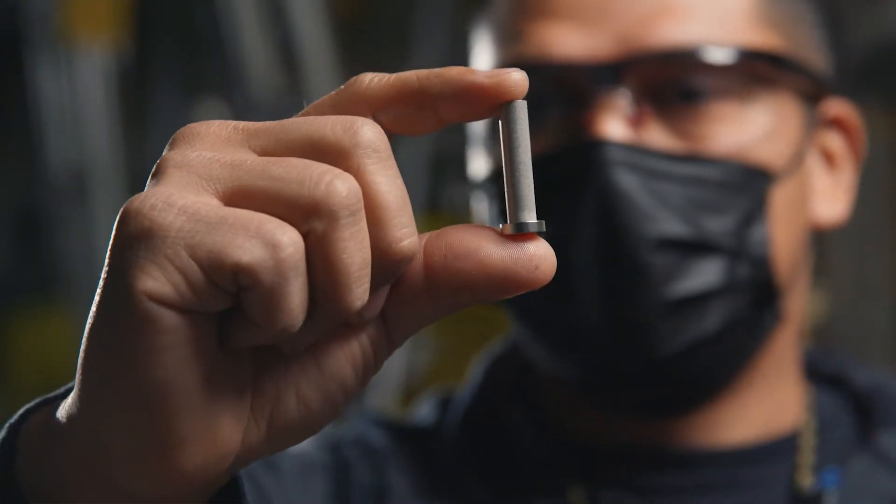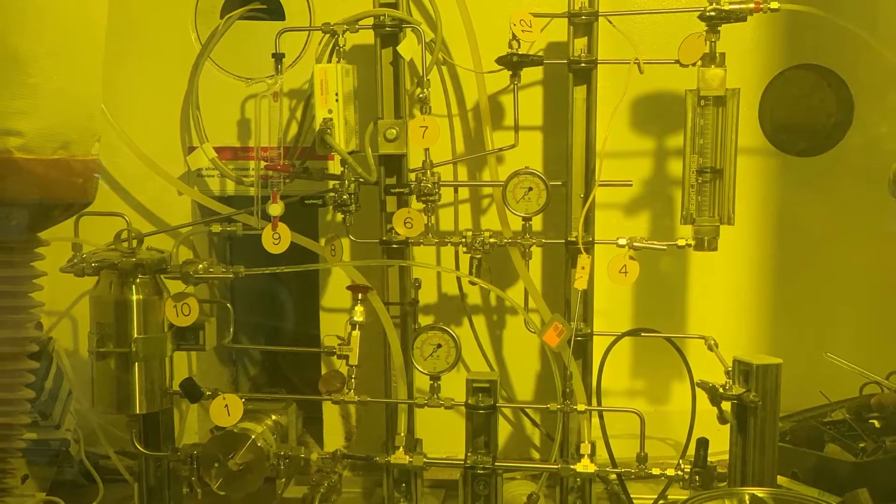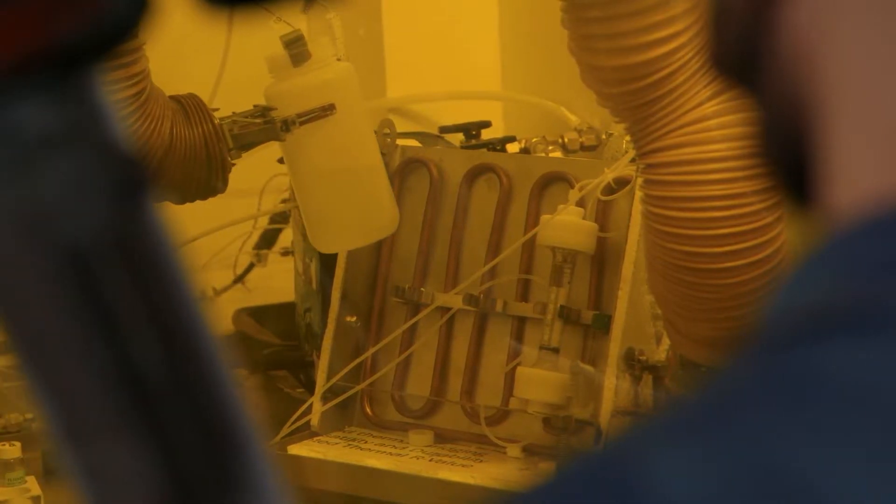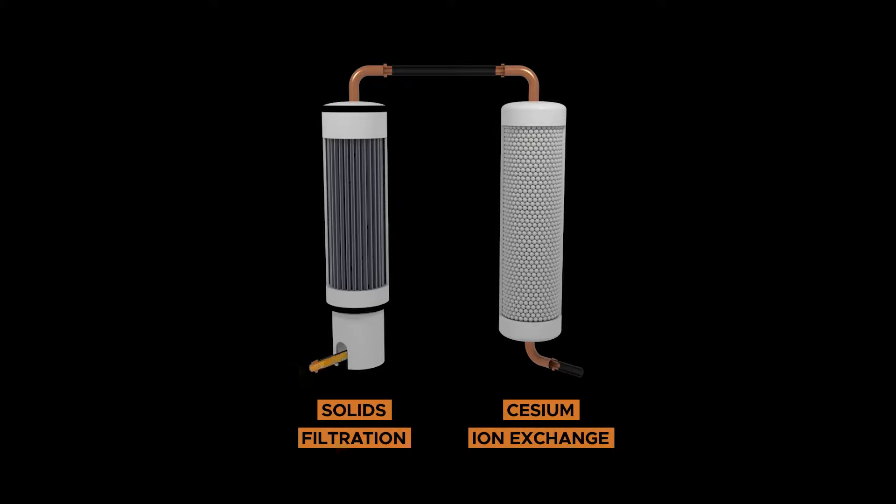The first two are the waste filtration system which removes solids and the ion exchange columns which remove highly radioactive cesium. Together these two unit operations represent the initial tank side cesium removal system that will operate during DFLAW processing.